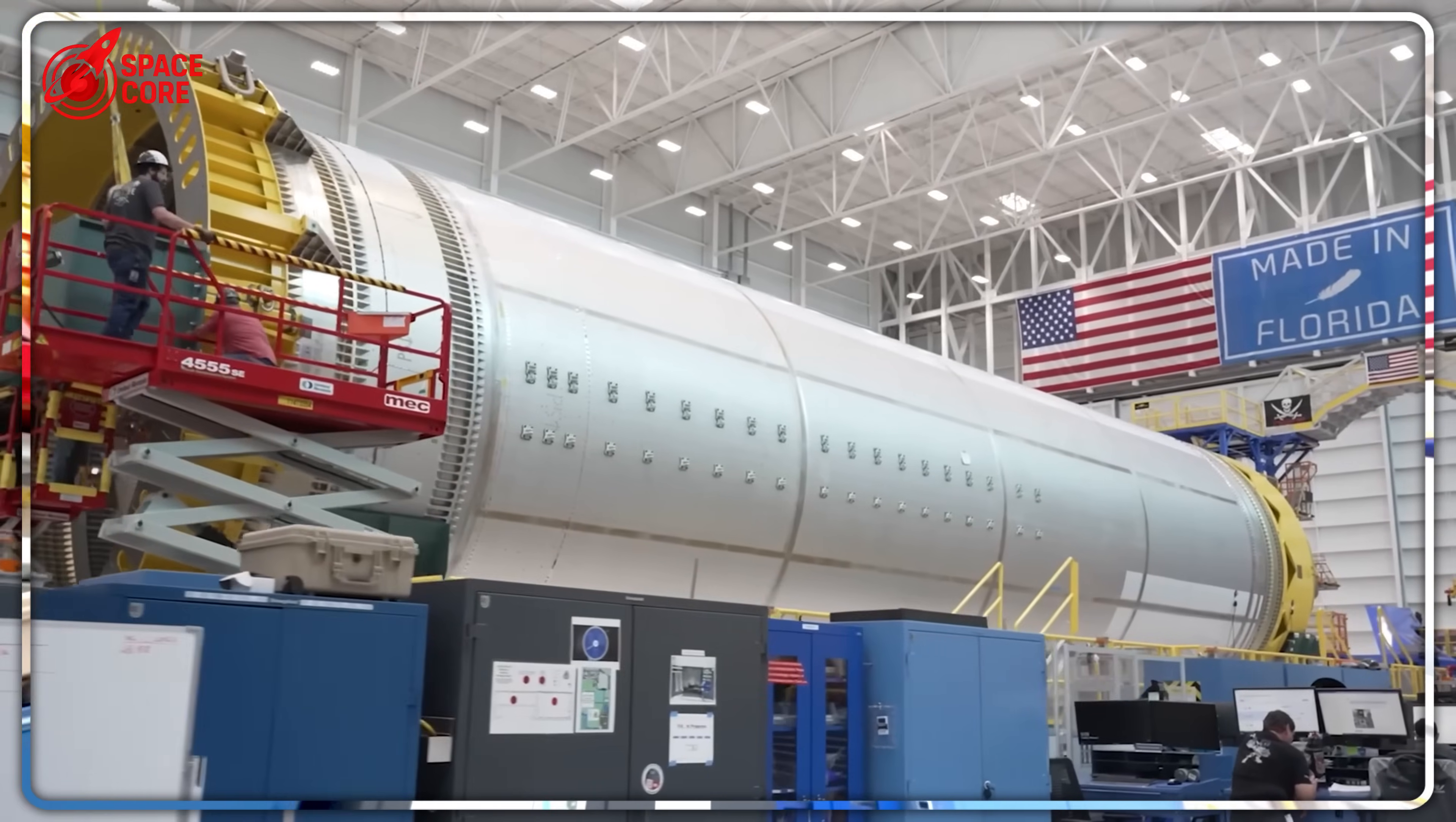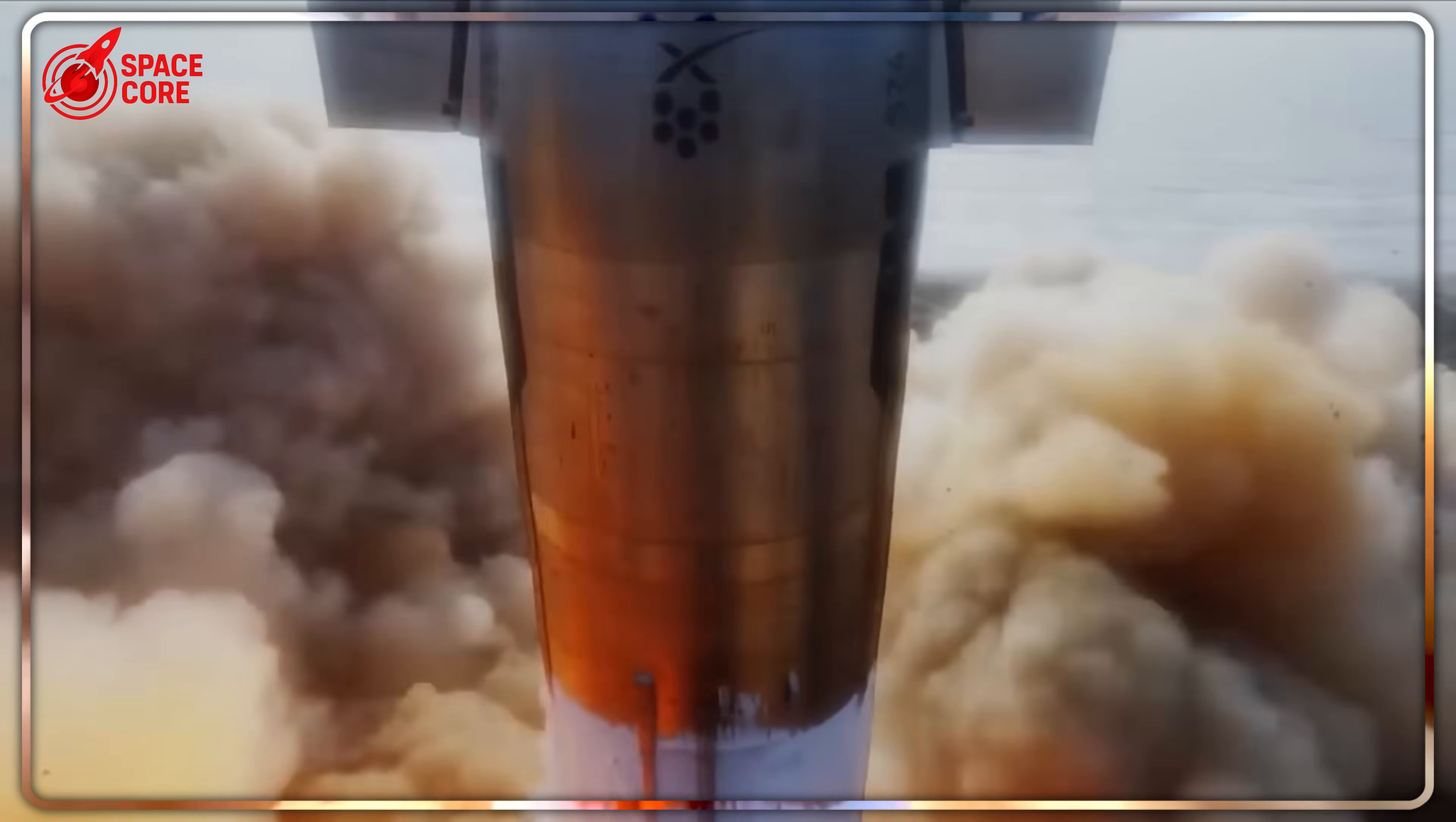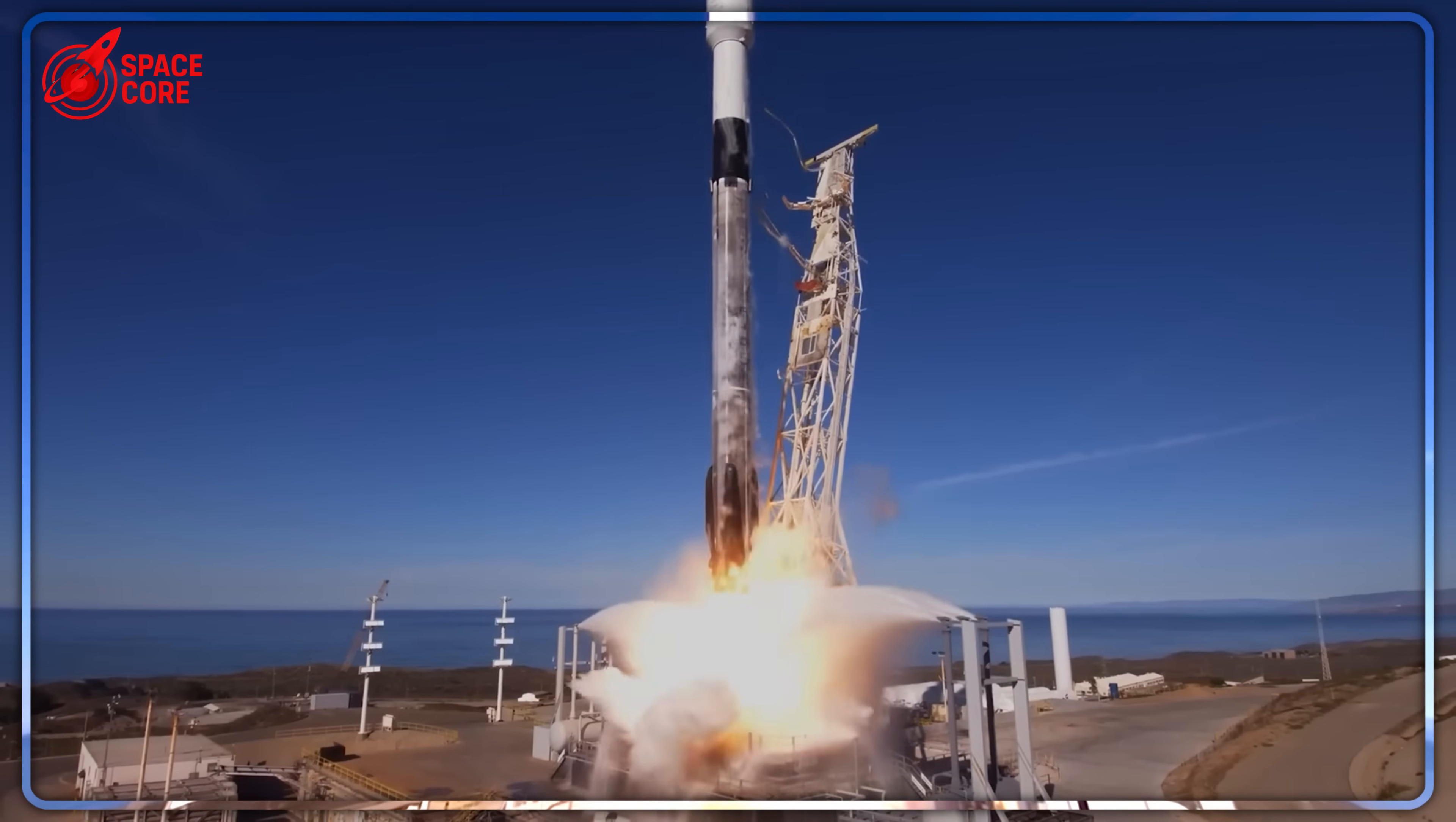Think about that. Two spacecraft worth $79 million heading to Mars, powered by engines that Blue Origin's own engineers admit are acceptably unstable. Not stable. Acceptably unstable. Would you fly on an airplane with acceptably unstable engines? The timeline is impossible. In 45 days, they need to install seven massive engines, each weighing as much as a small car, complete static fire testing assuming the engines don't explode, assemble a 400-foot rocket, roll it to the launch pad, load the Mars spacecraft, and pray everything works. Industry veterans are calling it suicide.